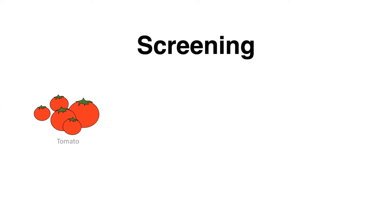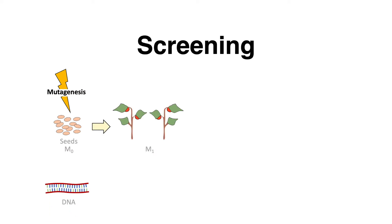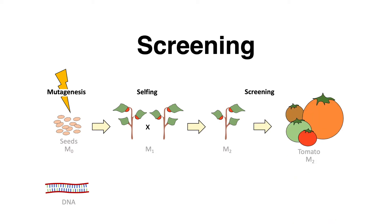Let's have a look at a typical screen for a desired phenotype of crop plants. Tomatoes make a good example for that. The seeds are treated with a mutagen such as EMS, which results in random point mutations across the genome. When the plants are grown, this generation undergoes self-fertilization. In the next daughter generation, one can screen for interesting phenotypes.